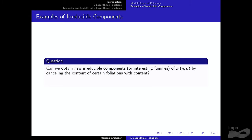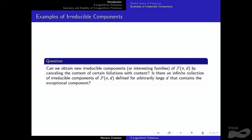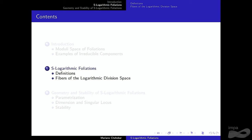The natural question is: can we obtain new irreducible components of the space of foliations by cancelling the content of certain logarithmic foliations with content? And can we unify the exceptional component inside a larger collection? The answer is yes, and that answer is the S-logarithmic foliations.